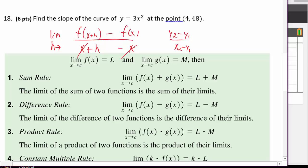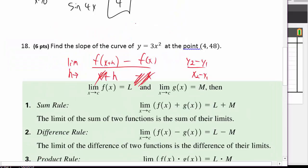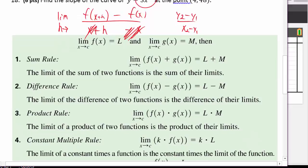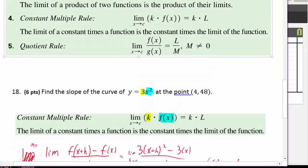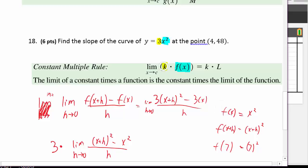Now, here's what I'm going to do. Instead of just taking my function to be 3x squared, I'm going to use a constant multiple rule. You don't have to do this, but this is a clever shortcut I'm showing you. Instead of seeing it as 3x squared, see it as 3 times x squared. So I'm going to factor the 3 out.